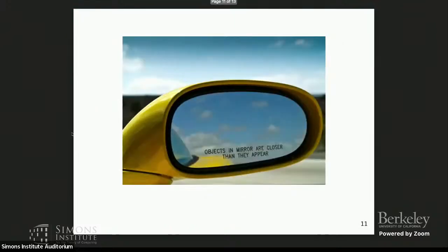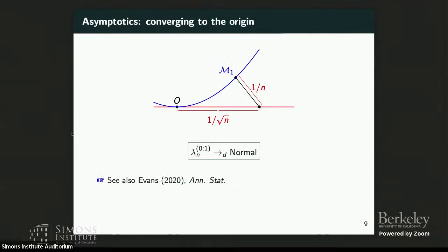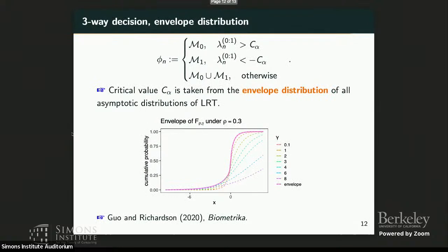And C_α is actually a bit funny as well, because the asymptotic distribution could depend on how and where the sample distribution converges to the axis or to the origin. So if you take all those asymptotic distributions and take a proper envelope, then that envelope could be used to formulate these critical values that is valid for all possible regimes.